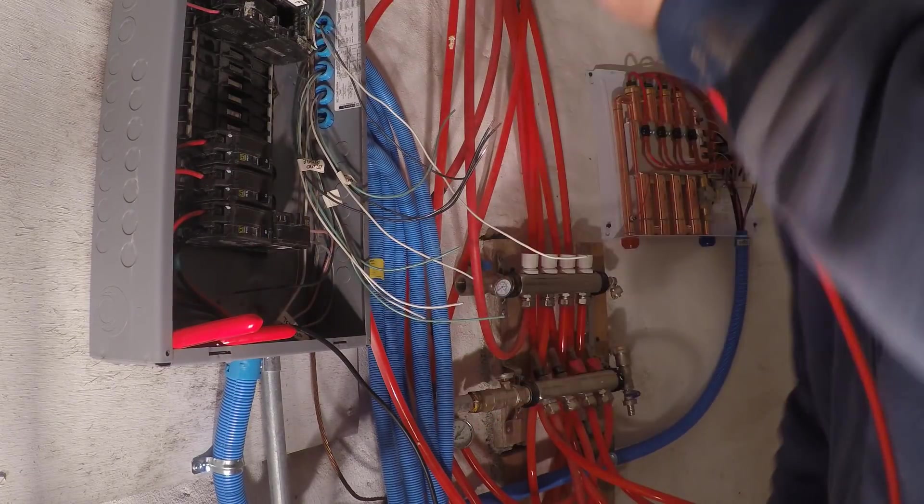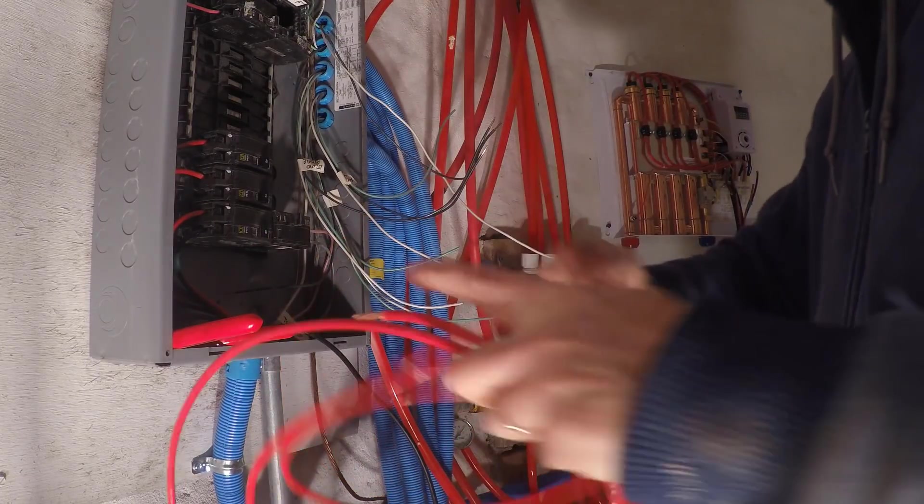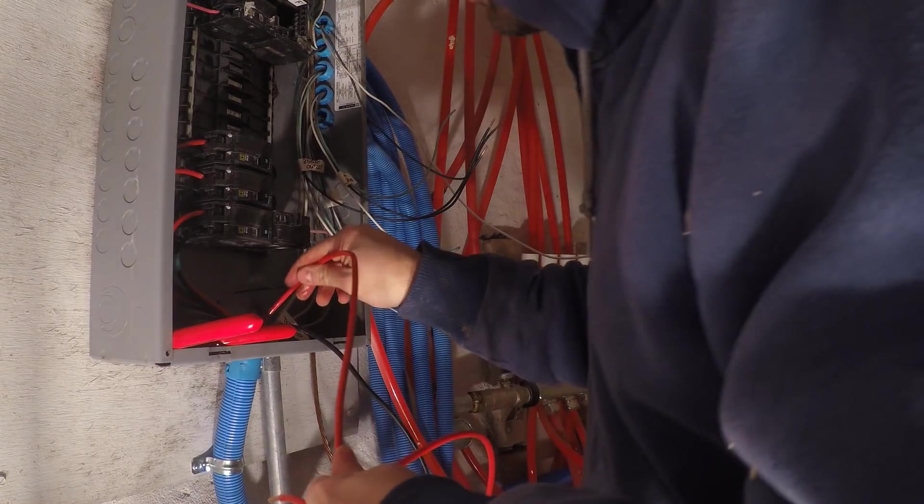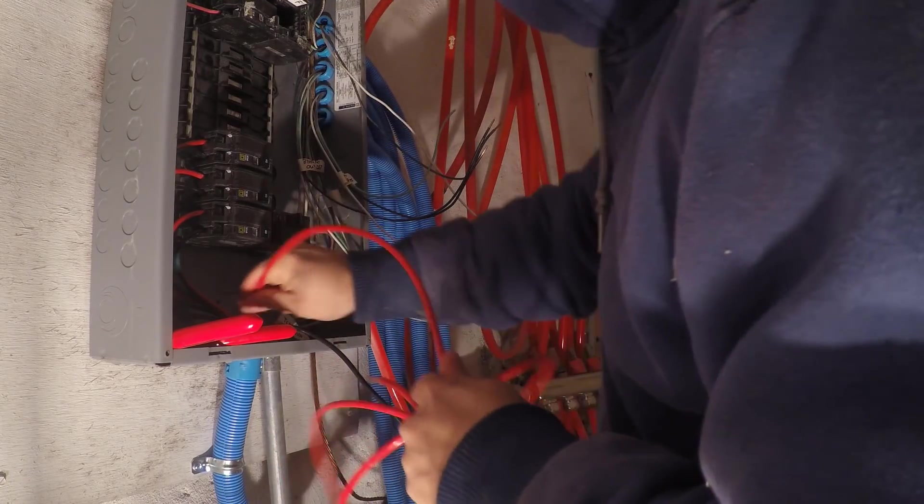Normally I would use a fishing tool to pull the wires through conduit, but these 8 gauge wires are stiff enough that I can just push them through this short section of ENT conduit.